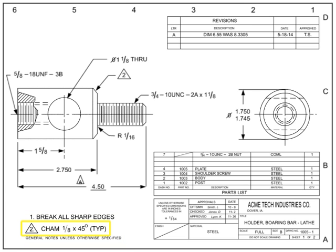Flag notes are notes that apply only where the flag appears in other areas of the drawing, such as the field or parts list. The callout typically includes a flag icon. Some drawing standards call these types of notes delta notes, as the note is indicated by a triangle in lieu of a flag. Flag notes can be annotated by either alpha or numeric characters.